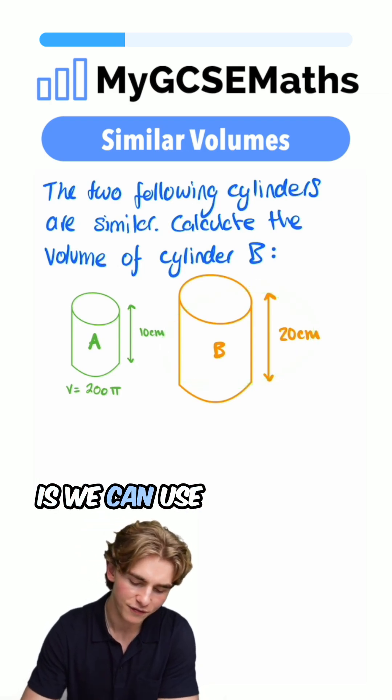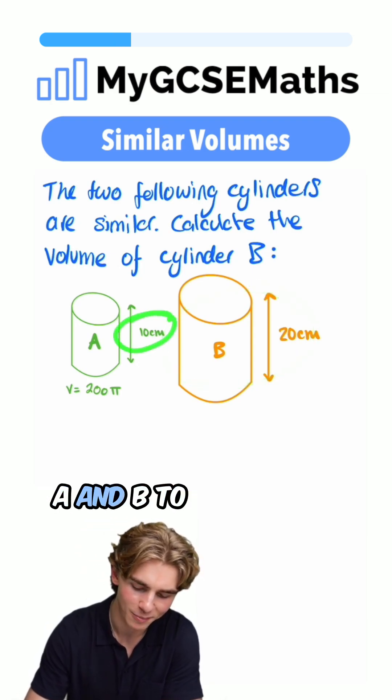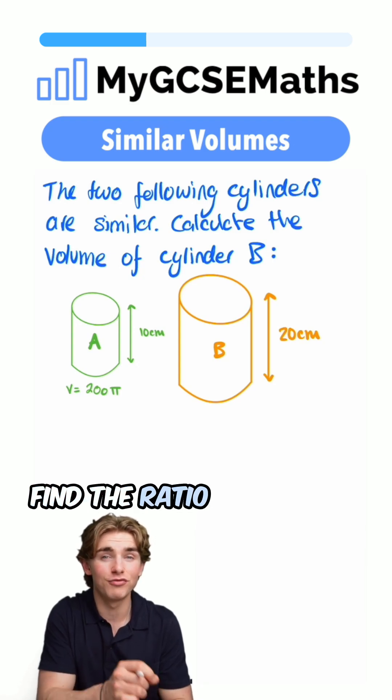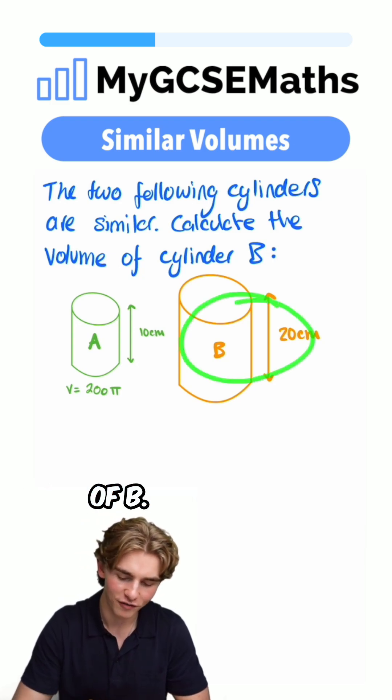What we can do is use the heights of A and B to find the ratio of the lengths in the two shapes. Then we can use that to find the ratio of the volumes and use that to find the volume of B.